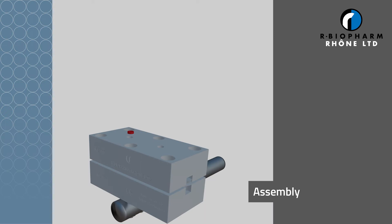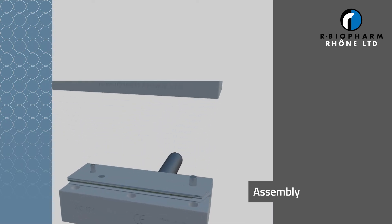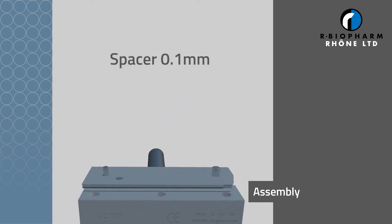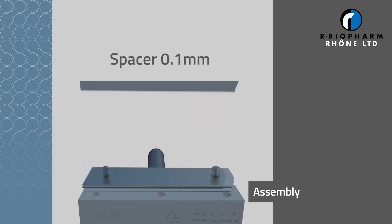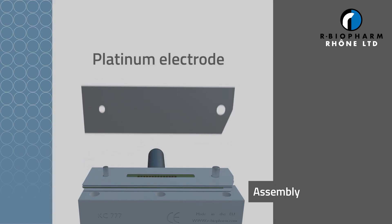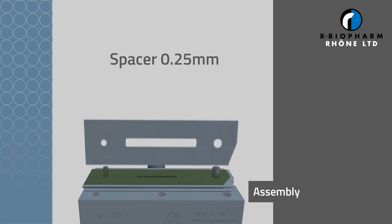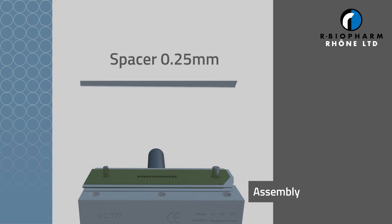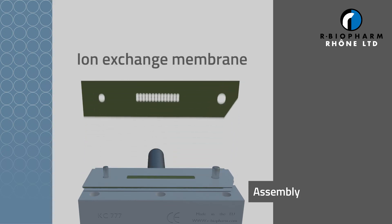The COBRA cell contains a platinum working electrode and a stainless steel auxiliary electrode, which are separated by a membrane and various spacers. These are sandwiched between a rigid plastic housing. The cell is fitted between the HPLC column and the detector.